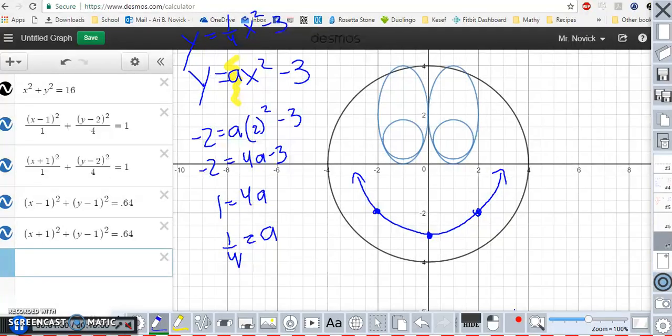Since this is the conics unit, maybe I shouldn't have it in this form. Maybe I should have it written as 4 times (y plus 3) equals x squared.